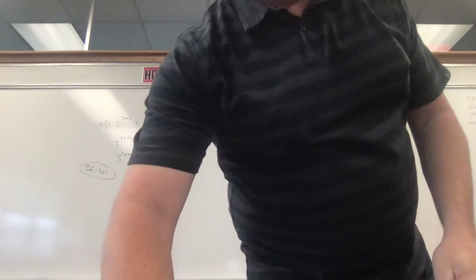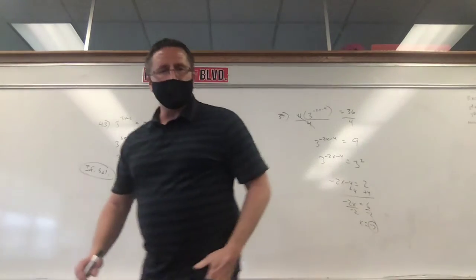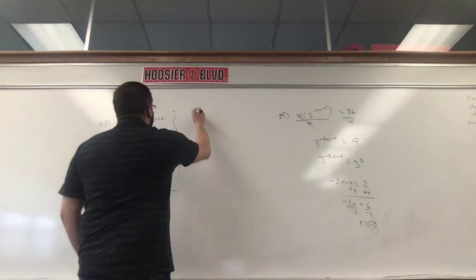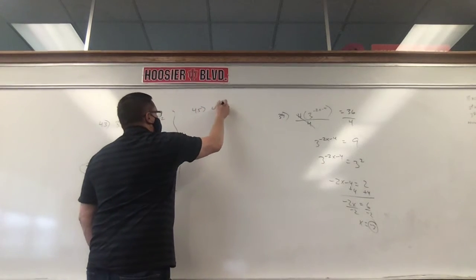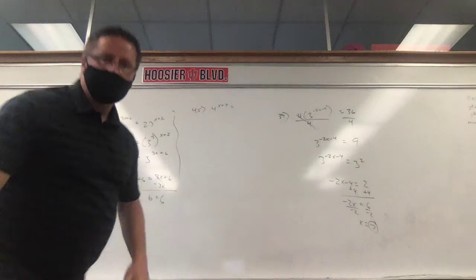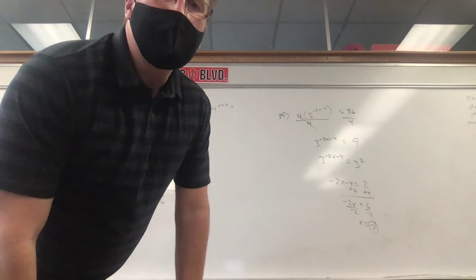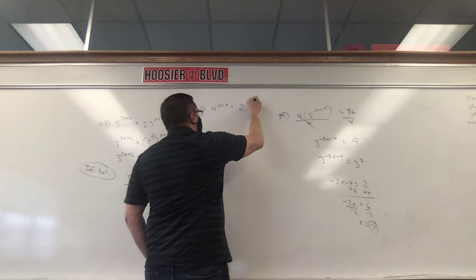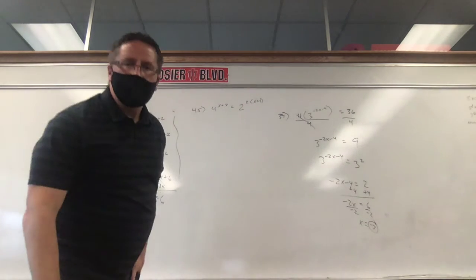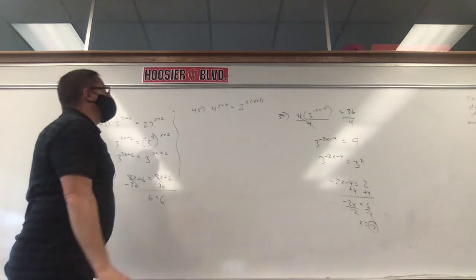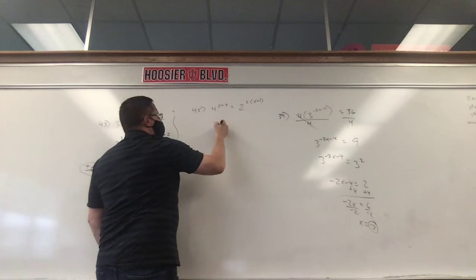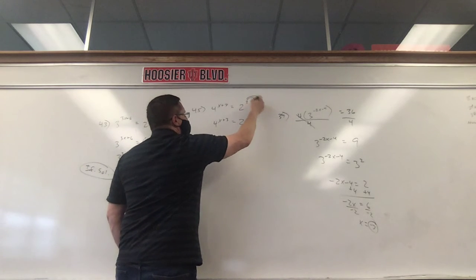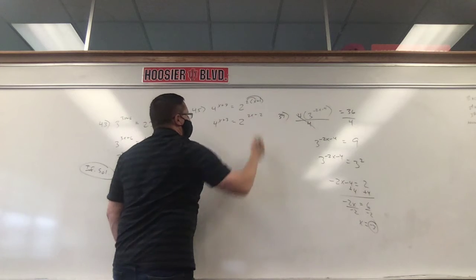All right. Where are we at? About 45. So we have 4 to the X plus 3. It has to equal what? 2 squared times X plus 1. Is that what it's written? Yes, it is. Okay. So let's go ahead and distribute this. We do that. We have 4 to the X plus 3 equals 2 to the 2X plus 2. 2 times X, 2 times 1.